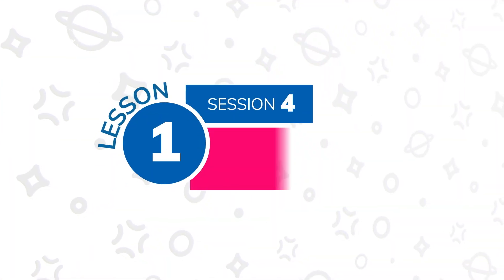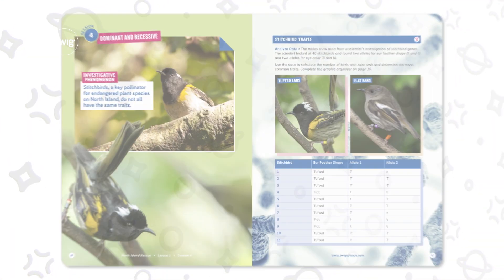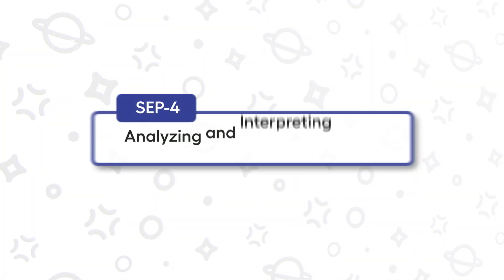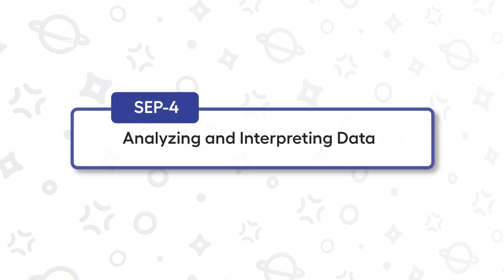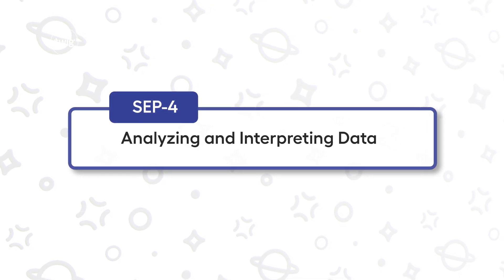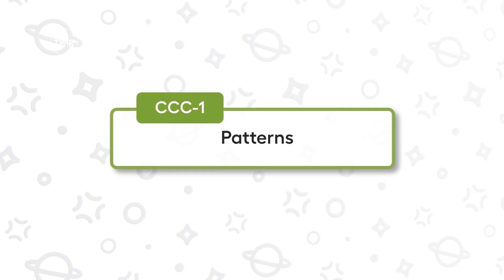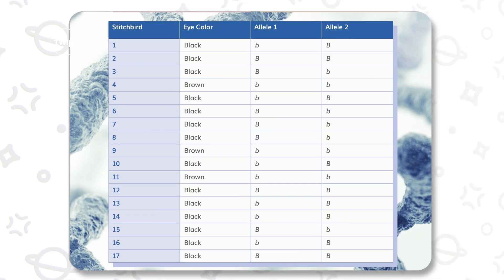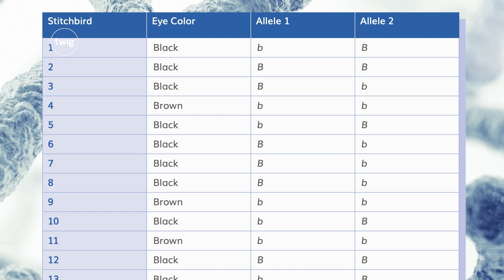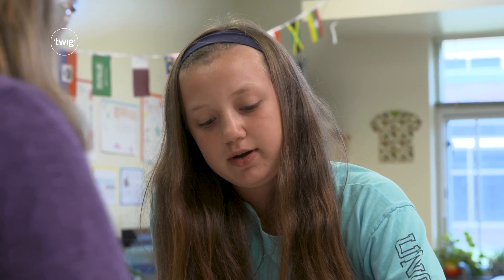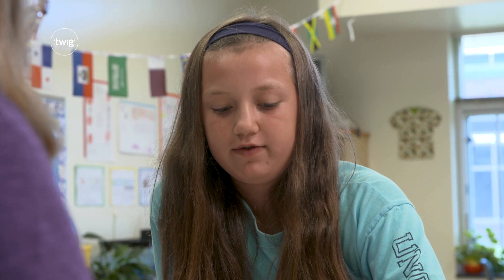In session 4, students analyze data about stitchbird traits and the alleles present in each bird's genes. Students are combining the science and engineering practice of analyzing and interpreting data and the cross-cutting concept of patterns. That pattern is their entry point to the idea of dominant and recessive: it has one dominant and one recessive, so the dominant overpowers the recessive.